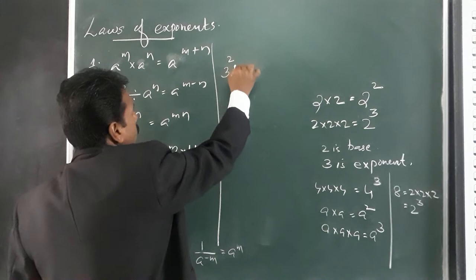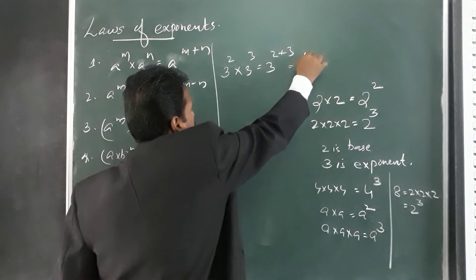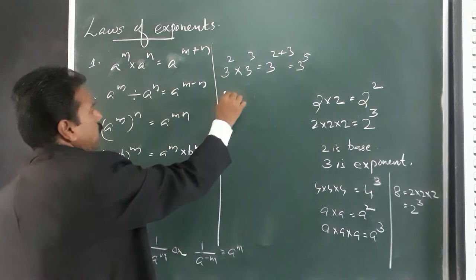Example one: 3 raised to 2 into 3 raised to 3 equals 3 raised to 2 plus 3, which is 3 raised to 5. We are adding exponents — multiplying 3 by itself five times.